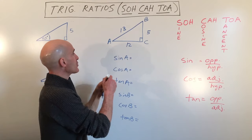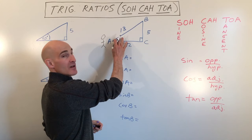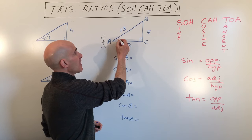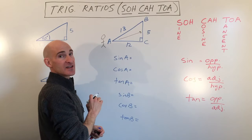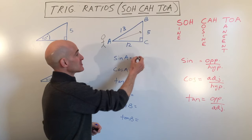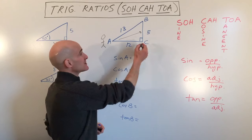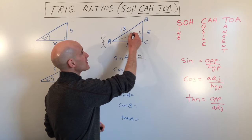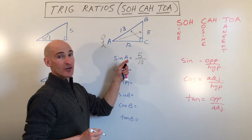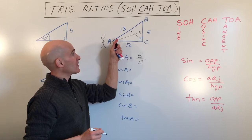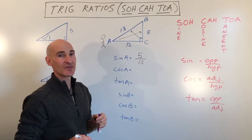If you're standing at this vertex — at angle A — the opposite side is diagonally across, which is 5. The hypotenuse is the side across from the right angle, which is 13. So the sine of angle A is 5 thirteenths.